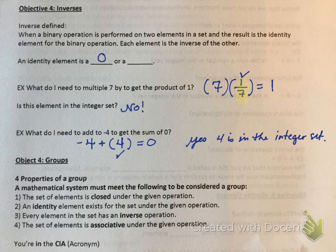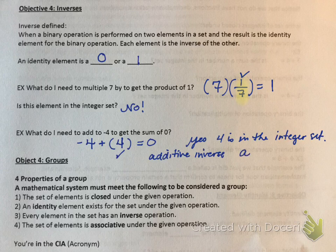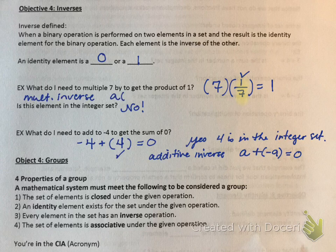An identity element is either a 0 or a 1. What do I need to multiply by to get 1, and what do I need to add to get 0? This is called the additive inverse — written in math speak, it's a plus negative a equals 0. And the multiplicative inverse can be written as a times 1 over a equals 1. So in terms of addition, it's the opposite; in terms of multiplication, it's the reciprocal.